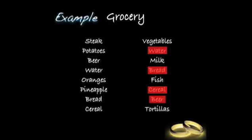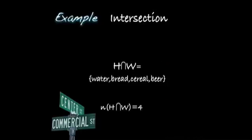All together, however, some of the items were listed twice — they were redundant. The water was listed twice, the bread was listed twice, and the cereal and the beer were both listed twice. These items were on both lists; these items are in the intersection. That reduces the 16 items to 12 if we throw out what was written down twice — there are really 12 items in the union. Four items were in that intersection: the water, the bread, the cereal, and the beer.